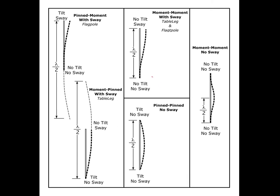This shows a bunch of different kinds of column configurations. If we have a rigid joint at the bottom but allow sway, we get a deformation we sometimes refer to as a flagpole. If we have a moment connection at the top but a pin joint at the bottom, we call this a table leg — a very common configuration where there's a moment connection of the leg at the tabletop but just a minimal connection at the bottom with no attempt to create a moment joint.